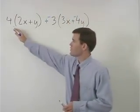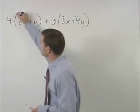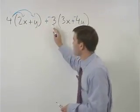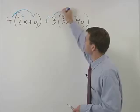Now we can distribute the 4 through the first set of parentheses and the negative 3 through the second set of parentheses.